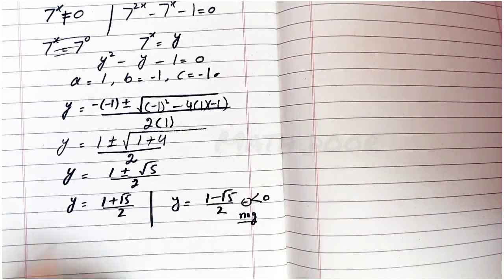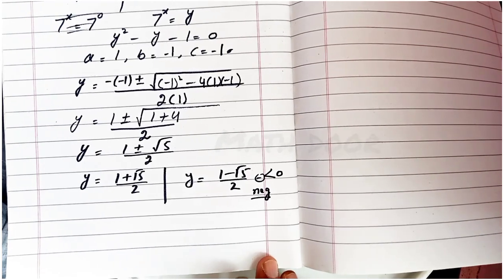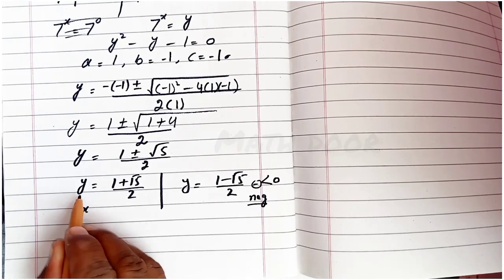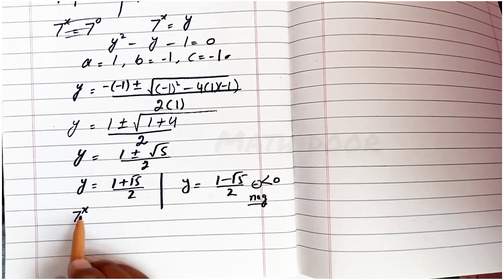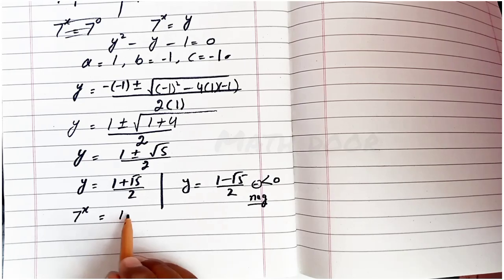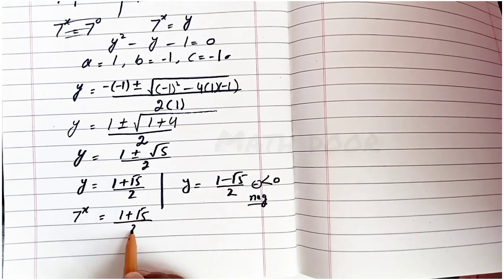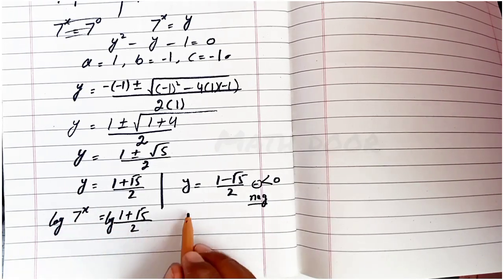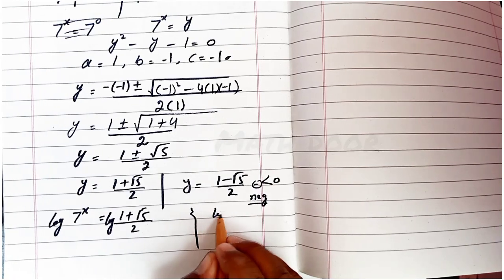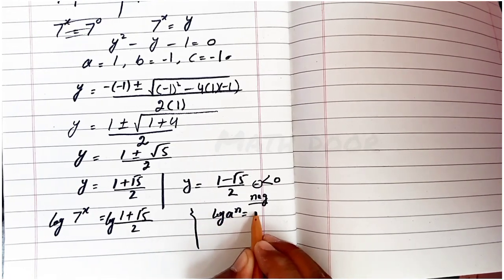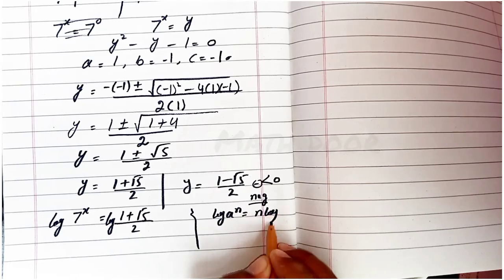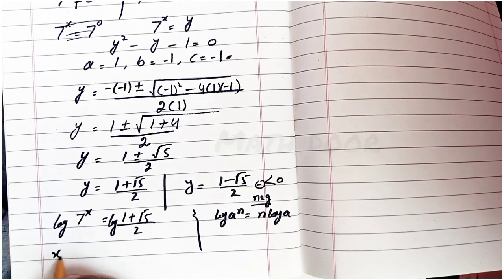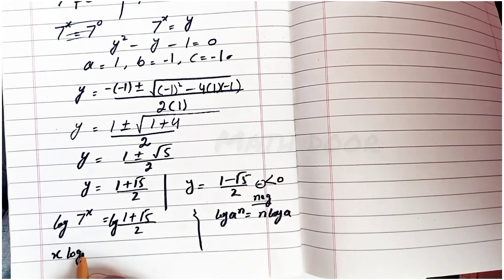Recalling our substitution, 7 power x equals y, so 7 power x equals (1 plus square root of 5) over 2. We take the log of both sides and apply the logarithmic rule: log of a power n equals n times log a. This gives x times log 7 on the left side.